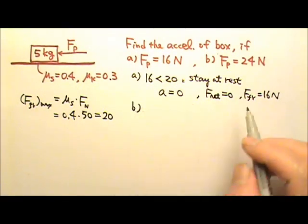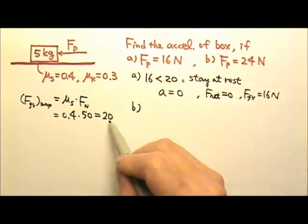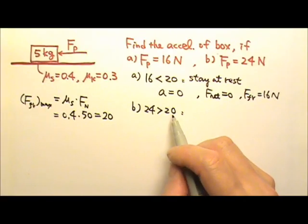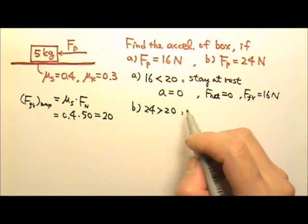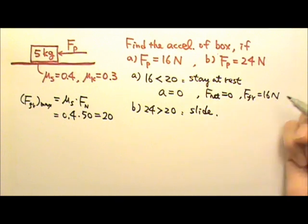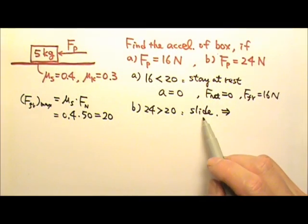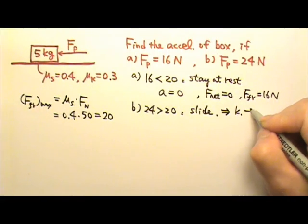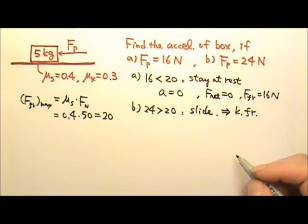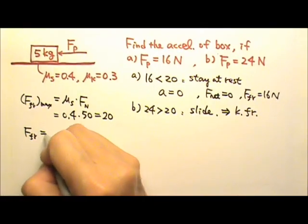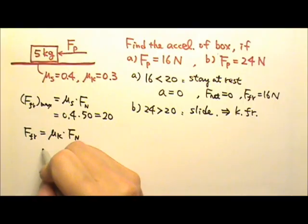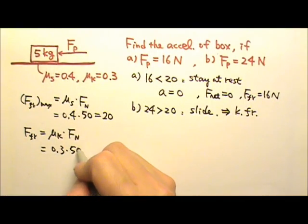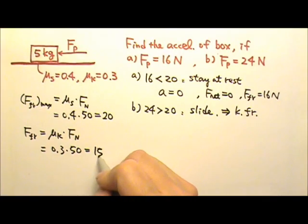Now for part B, 24 newtons is bigger than 20. That means that's enough to overcome the maximum static friction. The box is going to slide. If it's sliding, that means we don't have static friction. We have kinetic friction. So we have to find the kinetic friction, which is μk times the normal force. μk is 0.3 and the normal force is still the same 50. So this is 15 newtons.